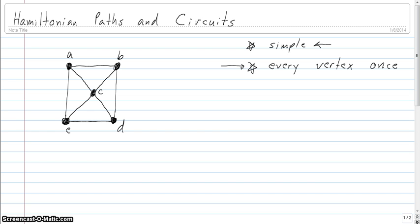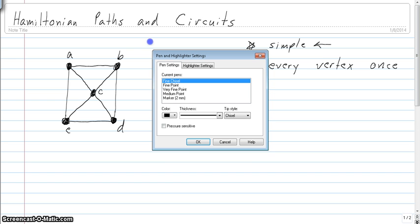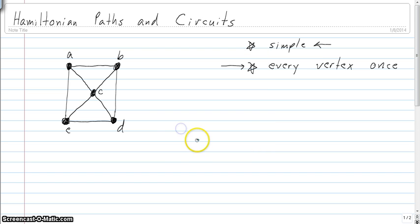For our purposes, we're just going to kind of see if we can do it. Our graphs won't be very complicated, and if there is a Hamiltonian path or circuit then we'll be able to find it. You kind of just start off on your journey. If you want to find a Hamiltonian path it's just a path that is simple and includes every vertex exactly once. So you kind of just start off.